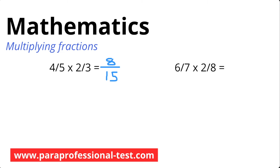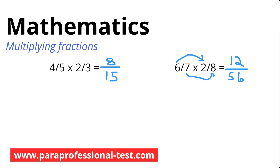This says 6 over 7 times 2 over 8. I'll use the same steps: multiply on top and bottom, then simplify. If you haven't already, pause, solve this problem, and come back for the solution. On top, I have 6 and 2 — 6 times 2 is 12. On the bottom, I have 7 and 8 — 7 times 8 is 56. I notice both numbers are even. I ask myself if there's a bigger number I can divide them both by. 4 goes into 12 three times, and 4 goes into 56 fourteen times. So I'll divide both top and bottom by 4, leaving me with 3 over 14.